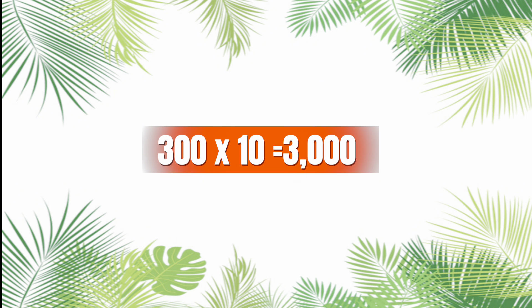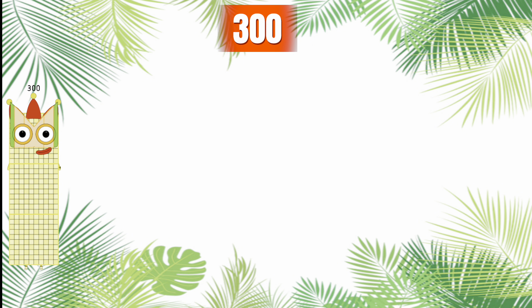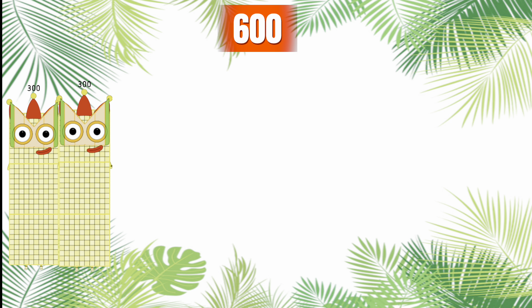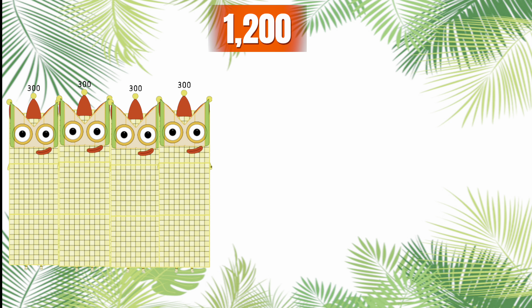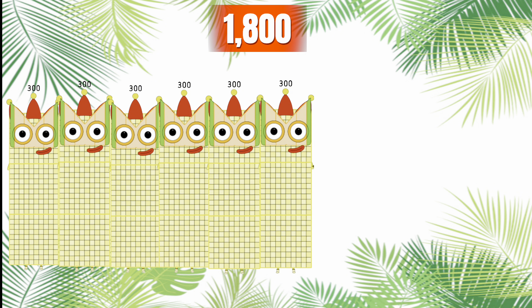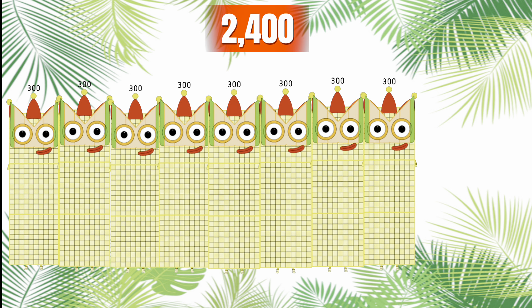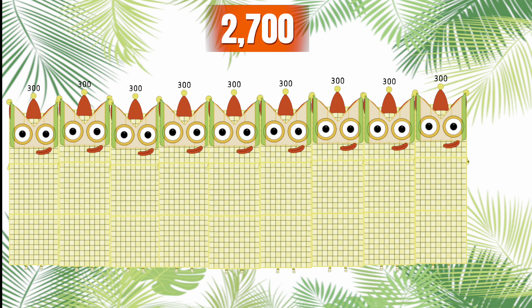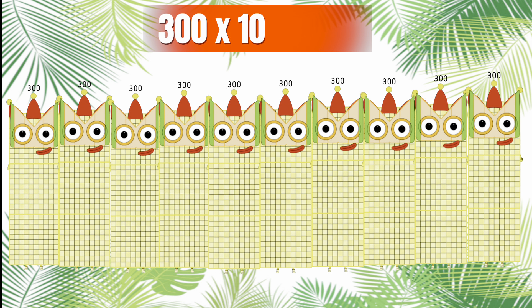Next, 300 times 10 is equals to 3,000. Let's count by 300: 300, 600, 900, 1,200, 1,500, 1,800, 2,100, 2,400, 2,700, and 3,000. 300 times 10 is equals to 3,000.